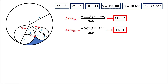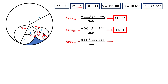Then, for the area of sector C, the formula is pi times radius squared times angle over 360, where the radius is 4. Since angle C is 27.66 degrees, the sector angle is 180 minus 27.66 equals 152.34 degrees. The area of sector C equals 21.27.